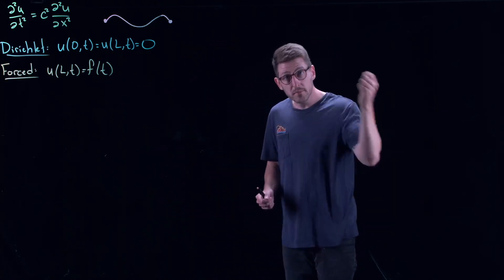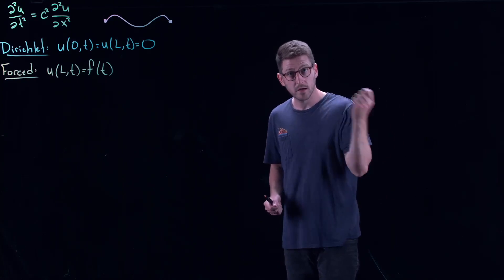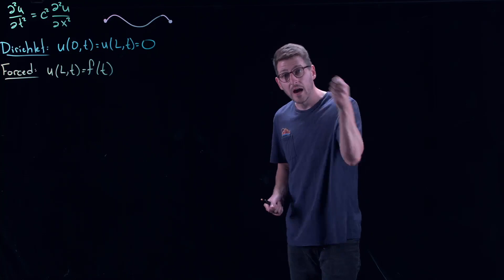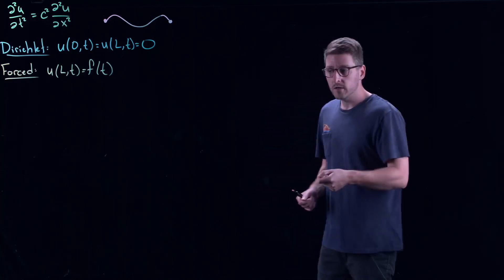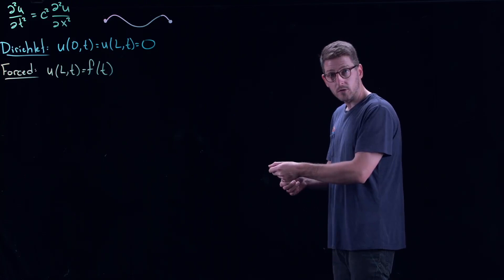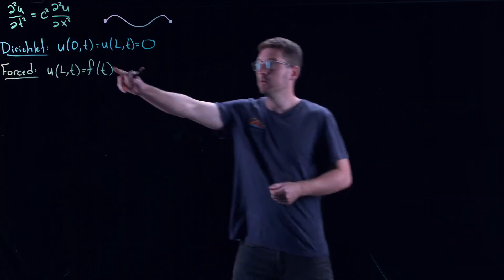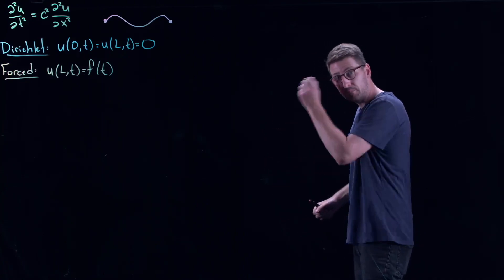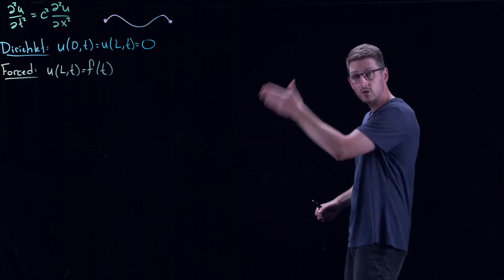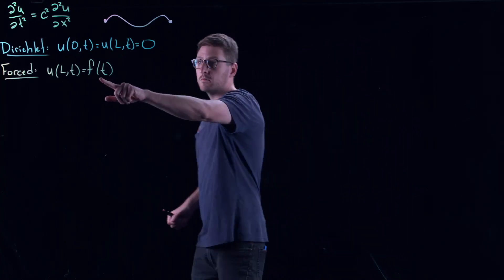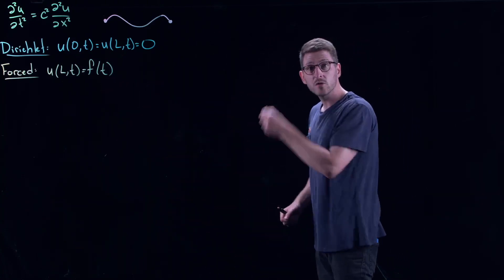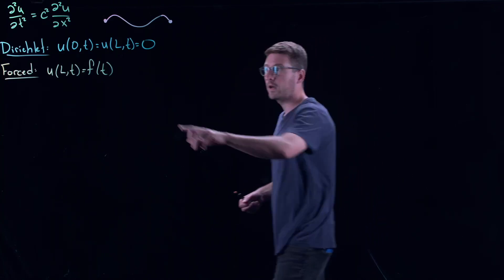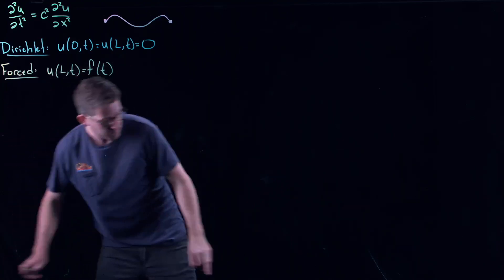What I'm doing is prescribing what happens to the string at the end points. A whole bunch of different things can be happening along the string, but at the end I am forcing it. If you wanted to do this in one dimension, take a skipping rope, tie it to one end — that gives a Dirichlet condition on one end — then vibrate the other end up and down. If you do that periodically, this might be a sinusoidal forcing; if you do it chaotically, maybe it's a chaotic forcing. Whatever you're doing on the end is forcing what's happening to the string inside.